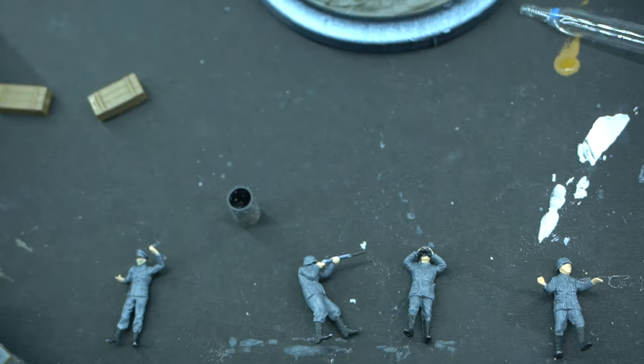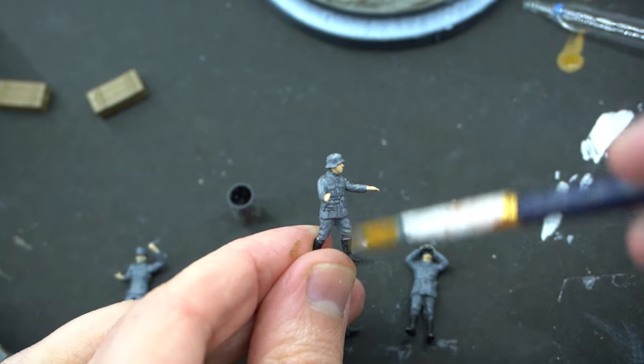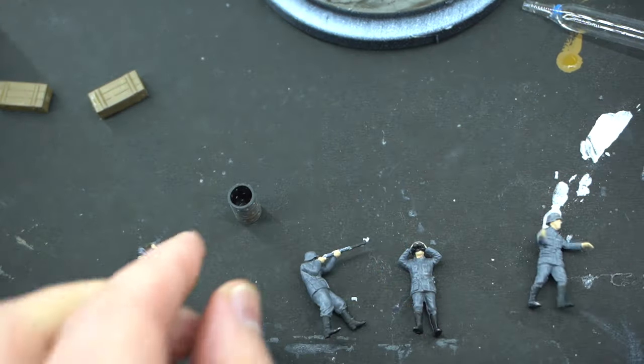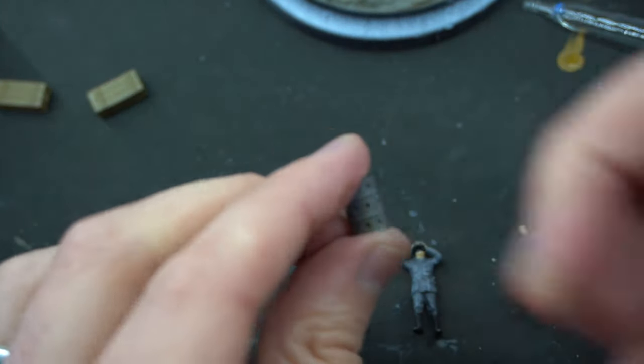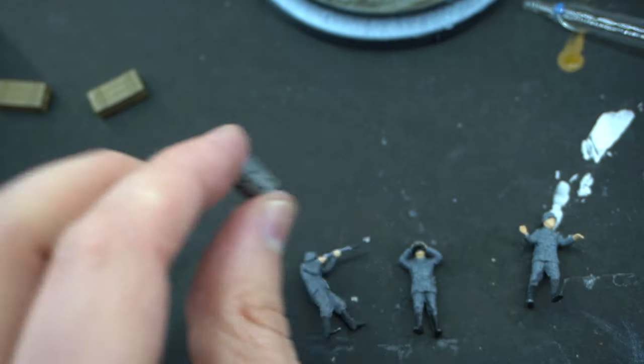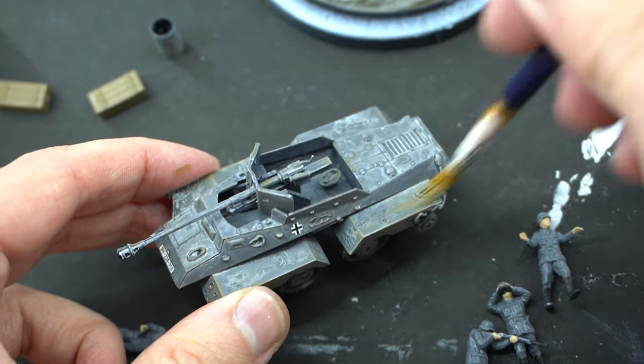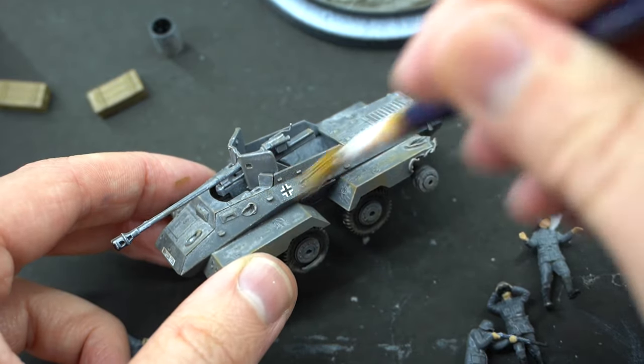Here this matte number one primer grey was dry brushed over everything I've already done—so that includes the figures, the armoured car, the 3D printed accessories, and even the display base. Everything will get a dry brush of this to further bring out highlights and add some tonal variety.